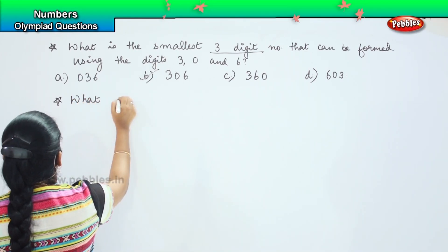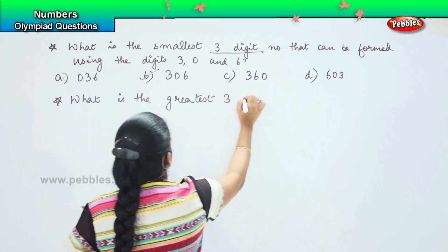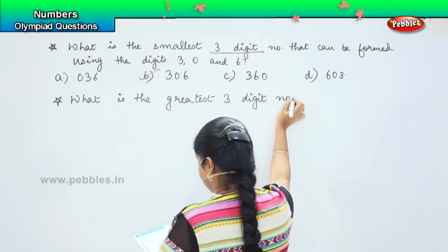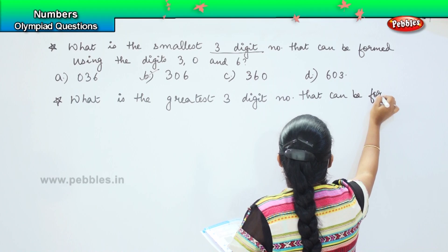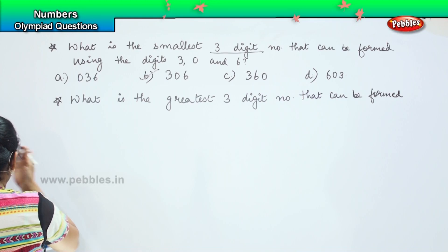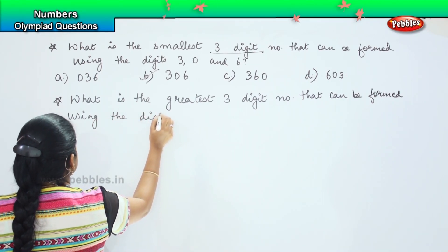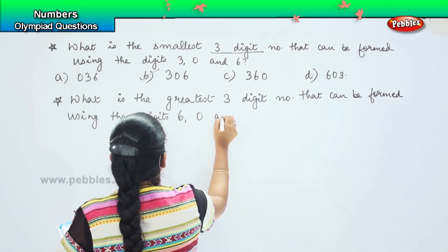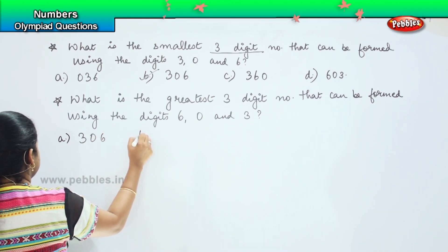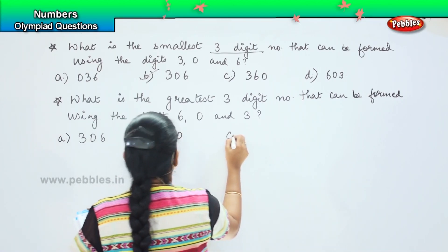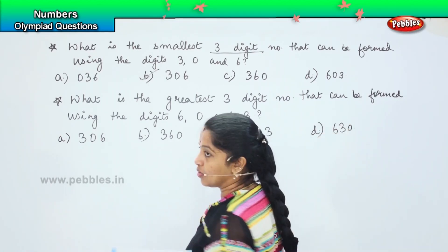What is the greatest three digit number that can be formed using the digits 6, 0 and 3? Your options are 306, option B) 360, option C) 603 and option D) 630.